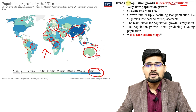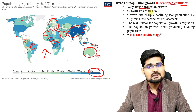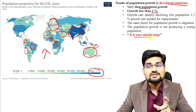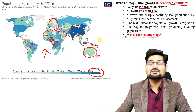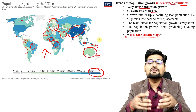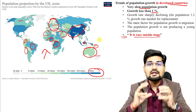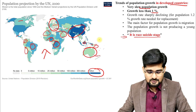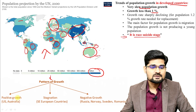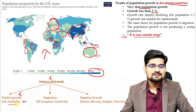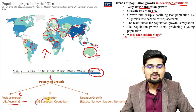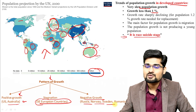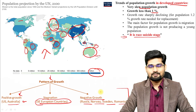In developed countries, very slow population growth — less than 1% — is also called racial suicide by many scholars, because you don't have enough growth rate to sustain or continue the minimum replacement level. Patterns of growth show: positive growth in the US and Australia, stagnation in Southeast European countries especially, and negative growth in Russia, Norway, Sweden, and Romania.